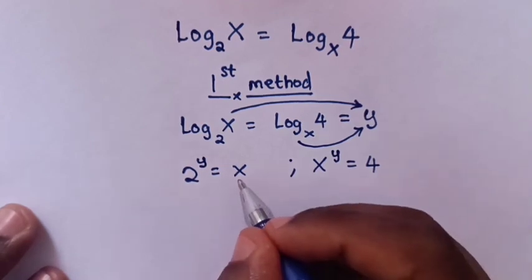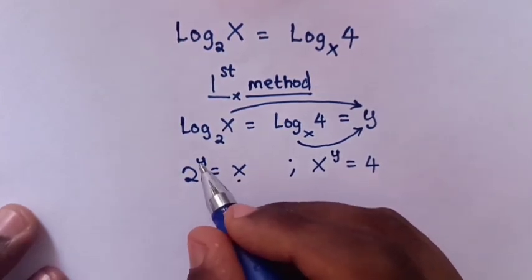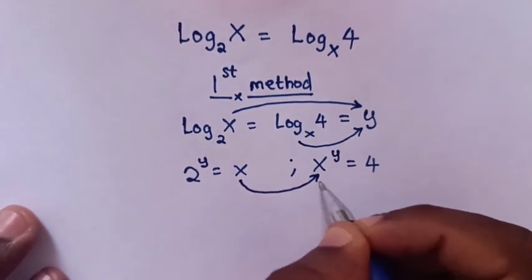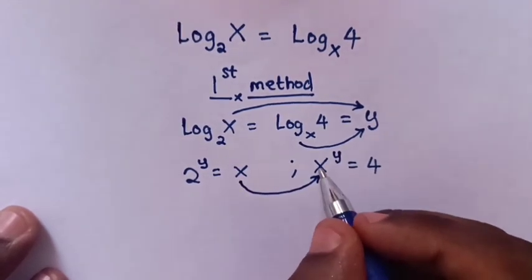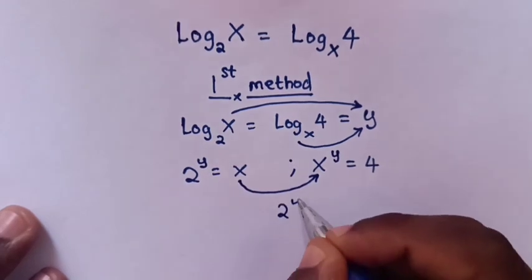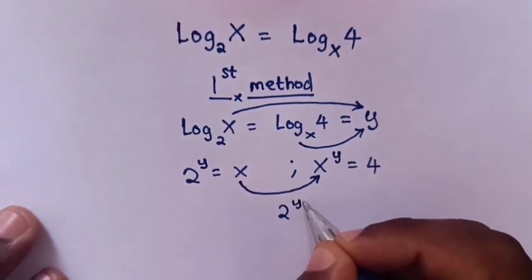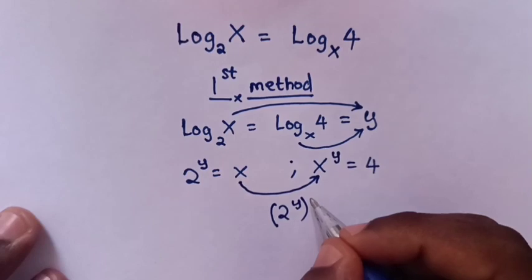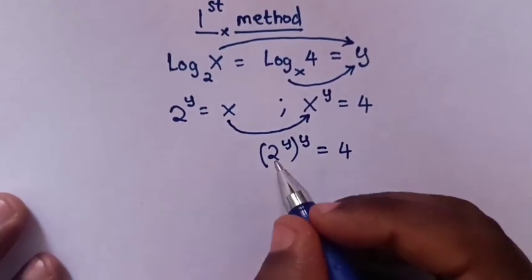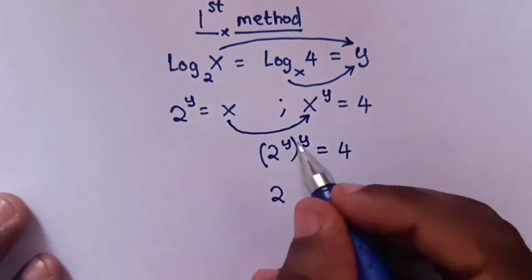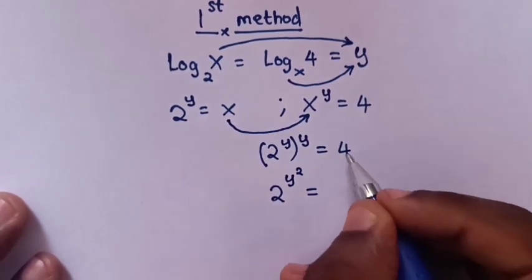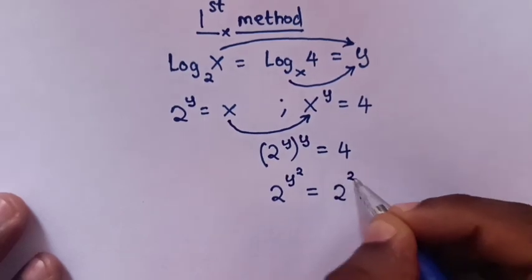Now, we can see that x equals 2 to the power y. So we substitute x into the equation x to the power y equals 4. Substituting x as 2 to the power y gives us 2 to the power y, raised to the power y, equals 4. So it becomes 2 to the power y-squared equals 4, which is 2 to the power 2.